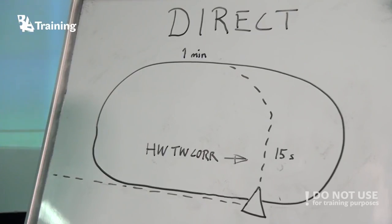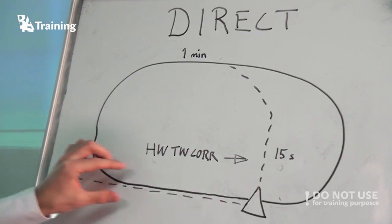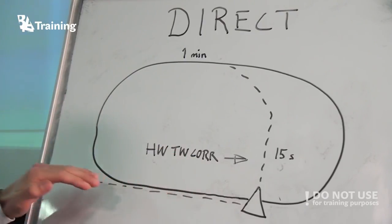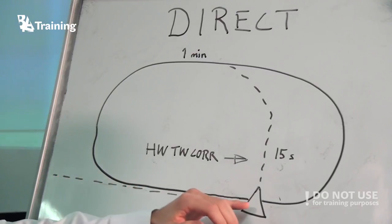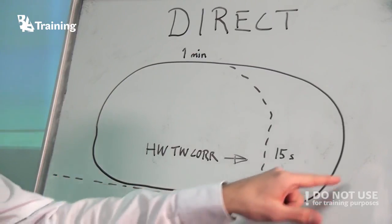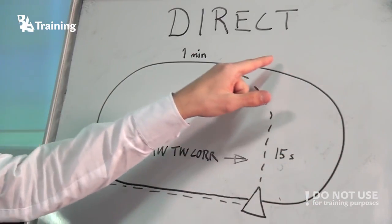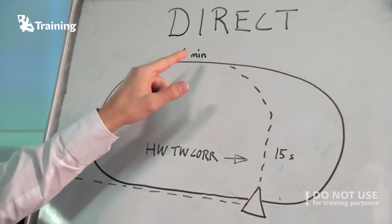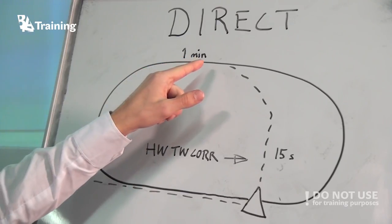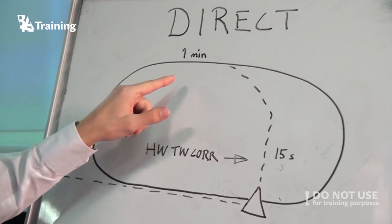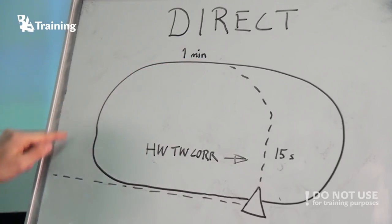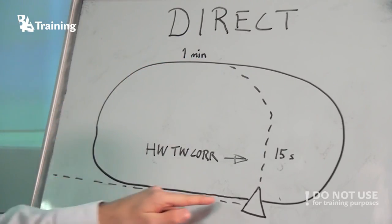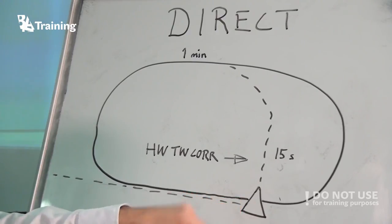The direct entry is very easy. If you come from this direction, you just proceed to the fix and start the turn, fly the outbound leg for one minute, then you turn in towards the fix again and start your holding.